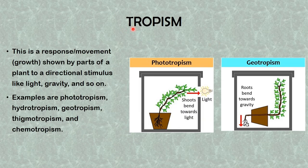Now we'll look at tropism. Tropism is a growth movement shown by parts of a plant in response to a directional stimulus such as light or gravity. Types include phototropism, hydrotropism, geotropism, thigmotropism, and chemotropism. For example, in phototropism, this plant bends towards light — that is positive phototropism. In geotropism, the root bends towards gravity (positive geotropism), while the shoot grows against gravity (negative geotropism).